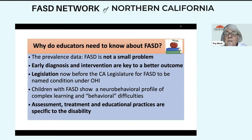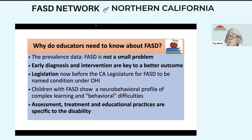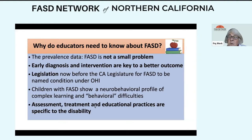Why do educators need to know about fetal alcohol spectrum disorder? First, the prevalence data — FASD is not a small problem. I've heard people say many times they don't have a student with FASD in their classroom or practice, but I'm telling you that you do — you just don't know it. It is a disability that hides in plain sight. Early diagnosis and intervention are key to a better outcome in adulthood. The Institute of Medicine reports that diagnosis by six years of age strongly predicts better outcome in adulthood.